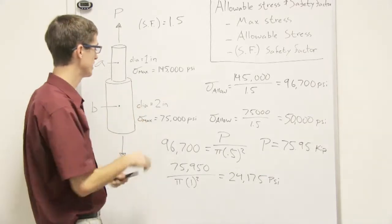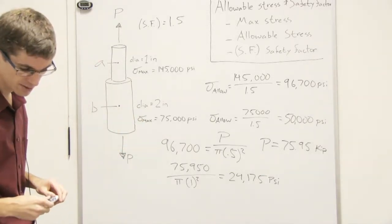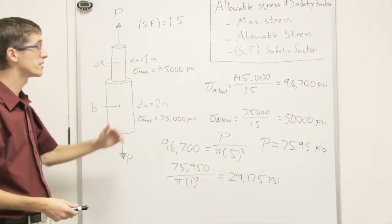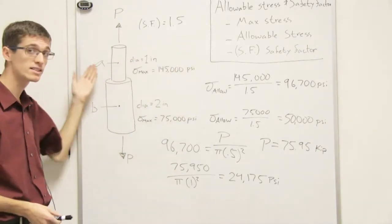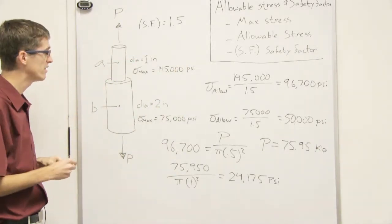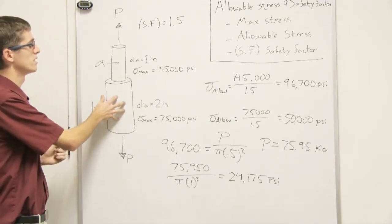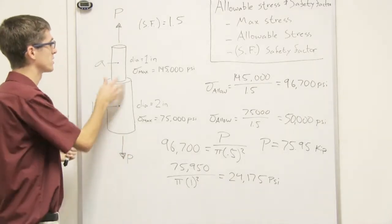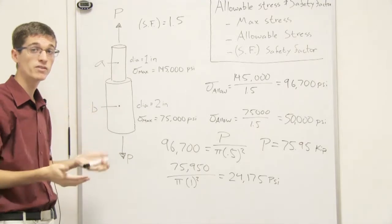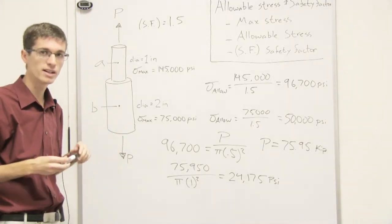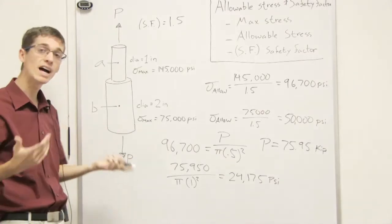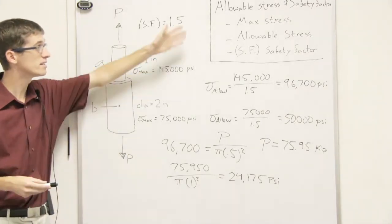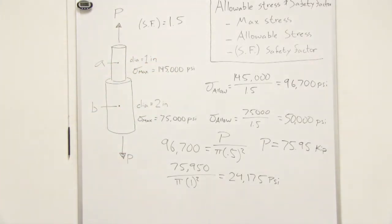When solving problems involving maximum and allowable stresses in a multi-piece system like this, you're not always sure where the critical stress will occur. You need to solve for both — make an assumption about which piece breaks first, solve for the force, then verify it doesn't cause the other piece to exceed its allowable stress. Make sure you understand these concepts and how to work through a problem like this.